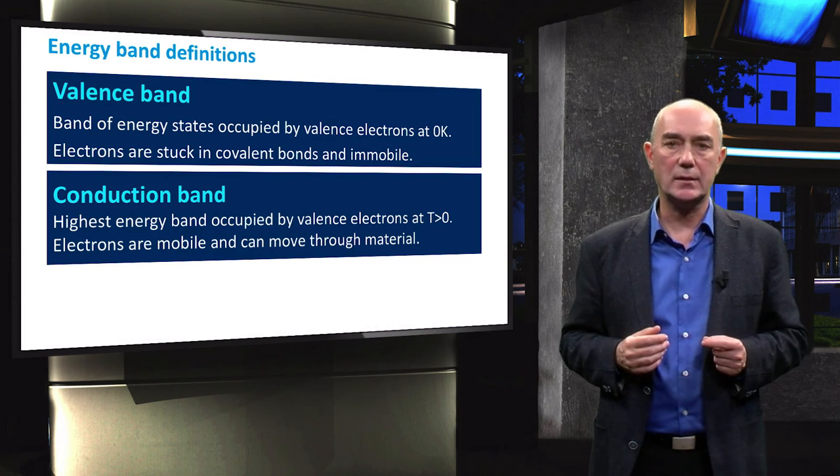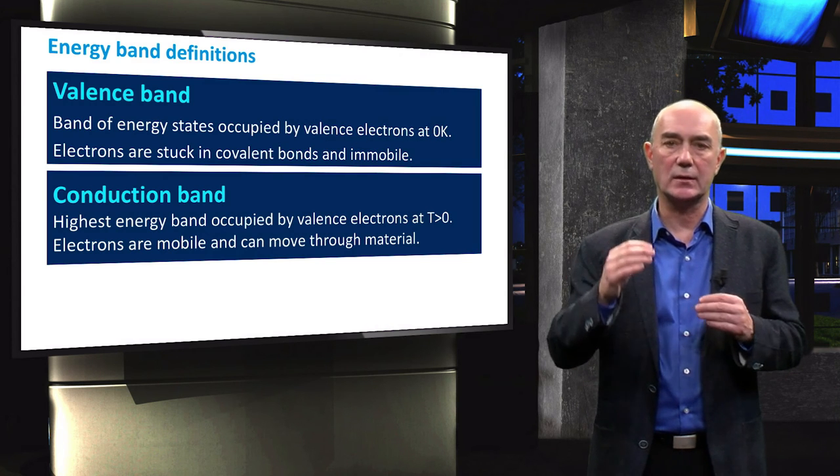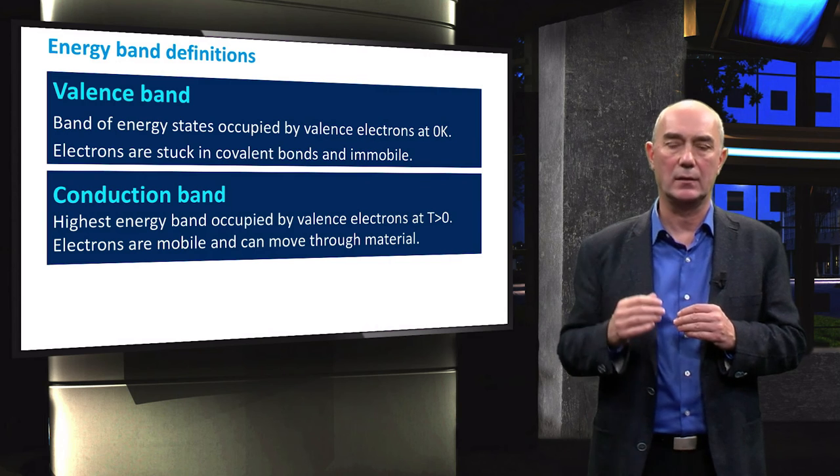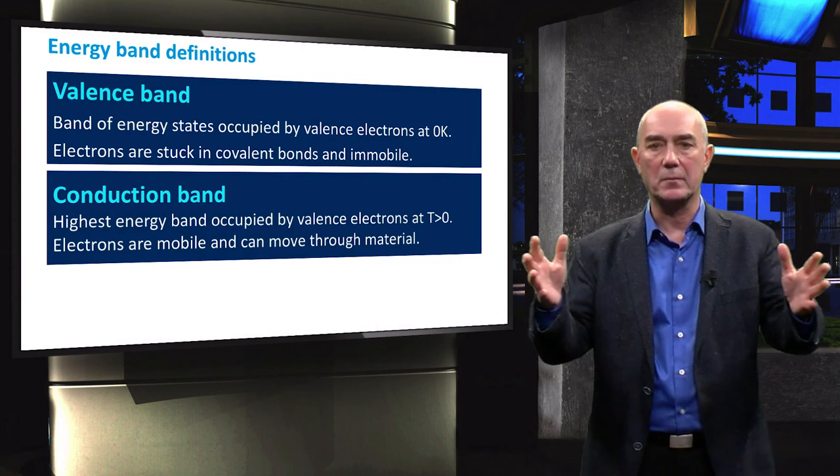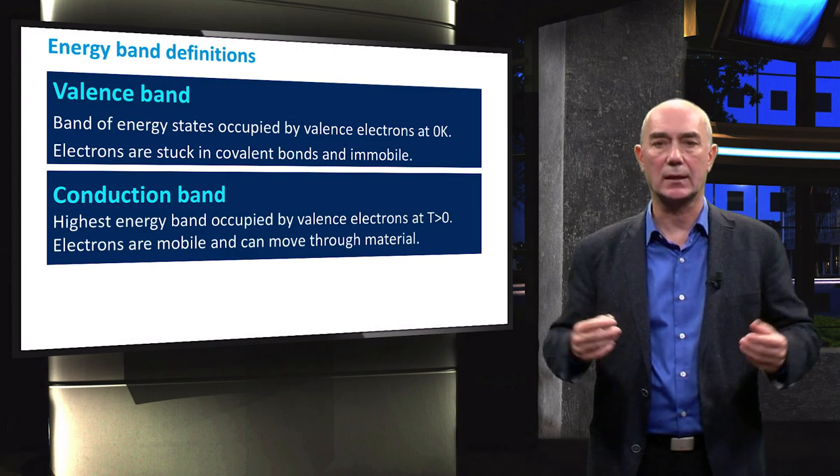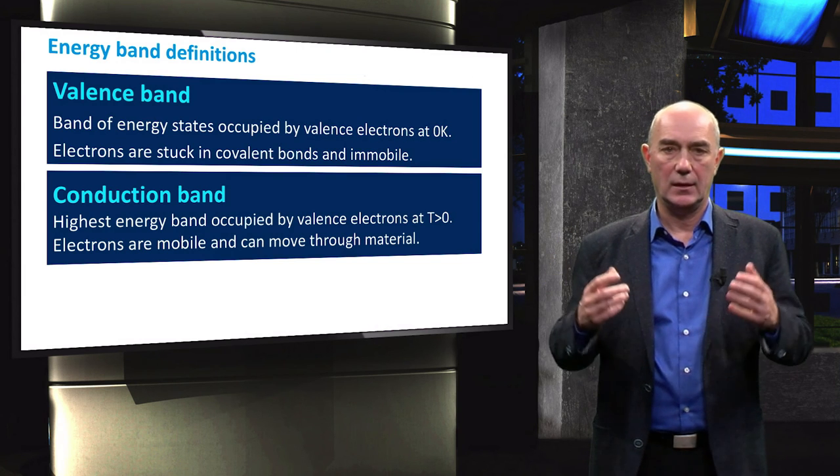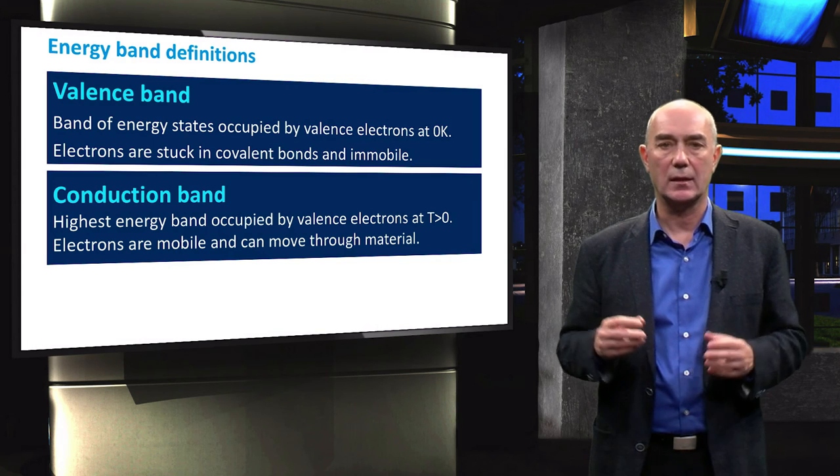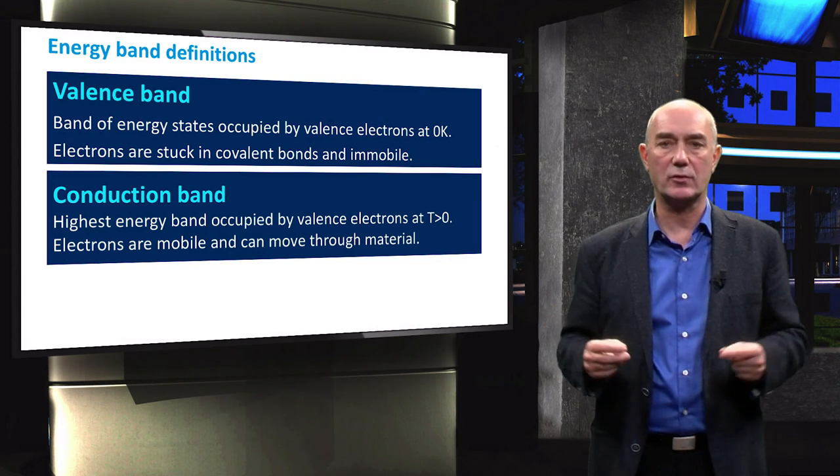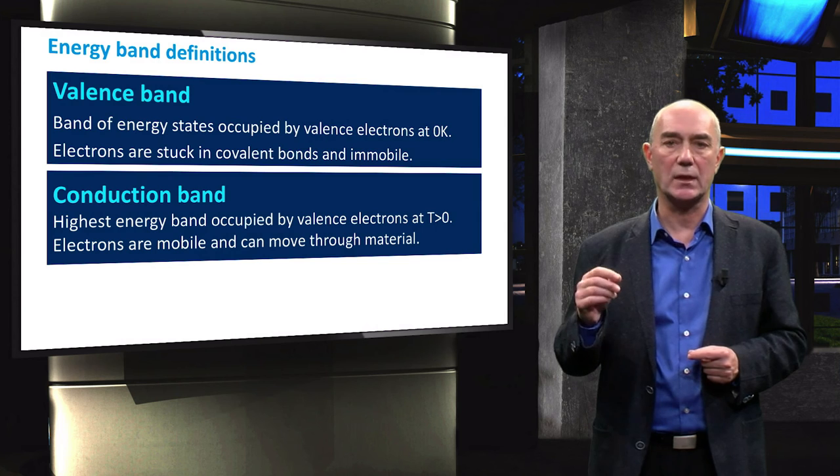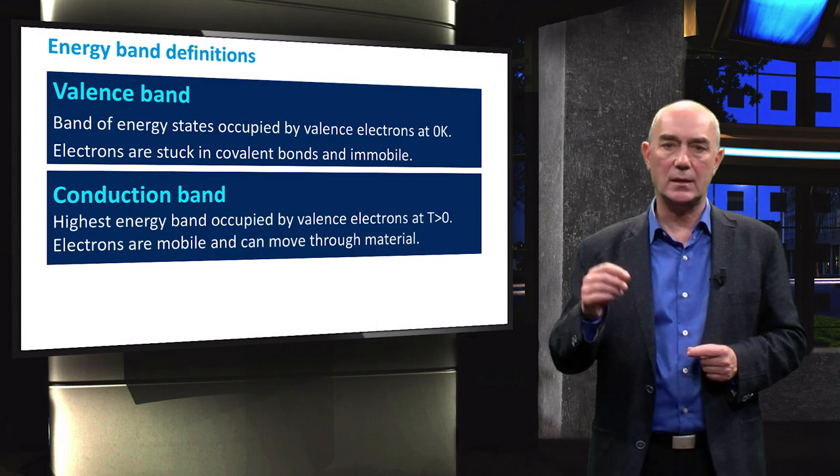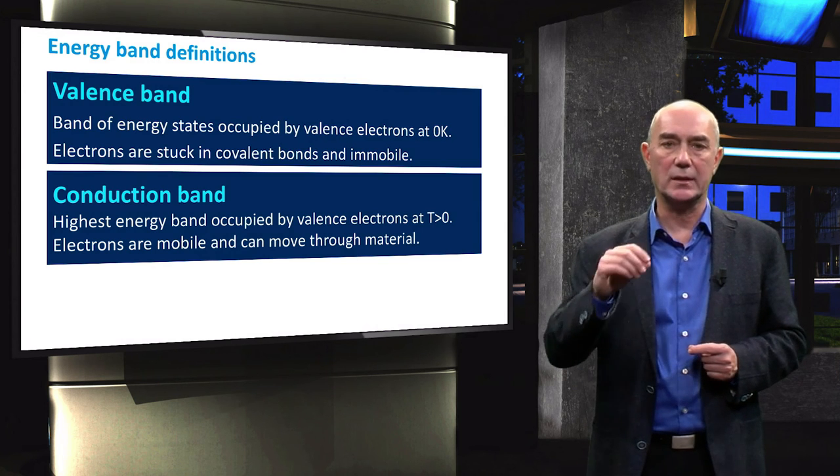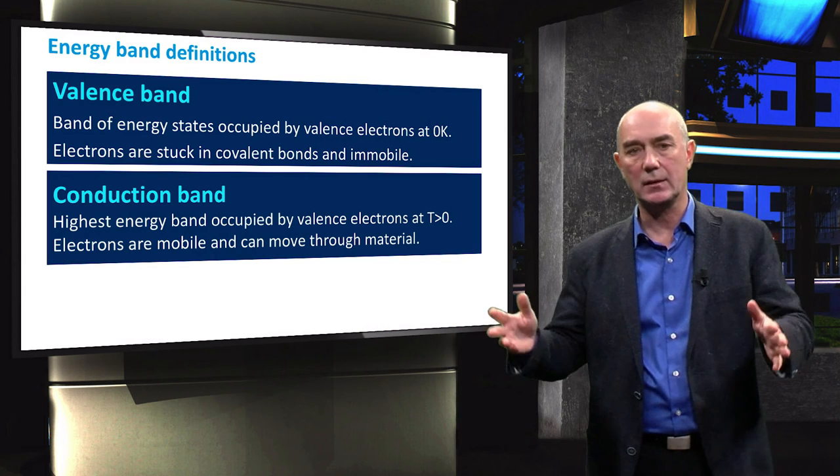In semiconductors, electrons with energy in the conduction band are mobile and can move throughout the material, allowing the material to conduct electricity. In the case of solar cells, as we will see in the following videos, light can excite valence electrons to the energy levels of conduction band. This is the first step to convert energy of light directly into electricity.